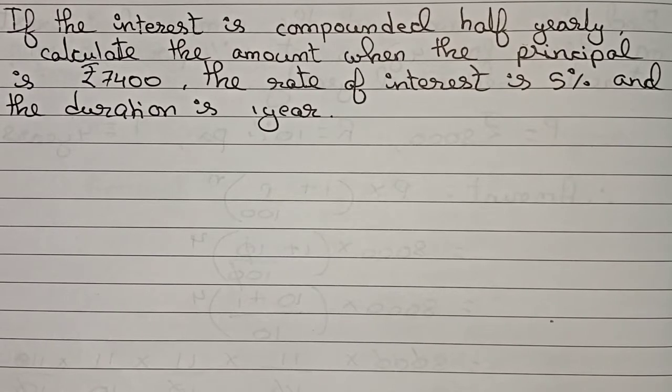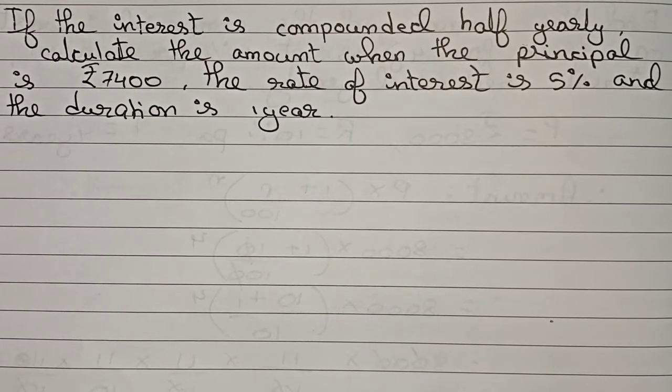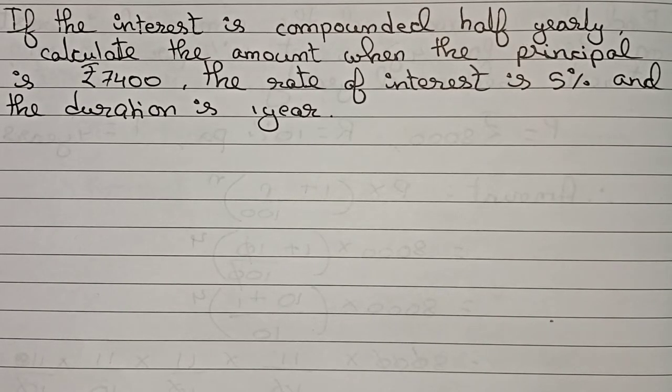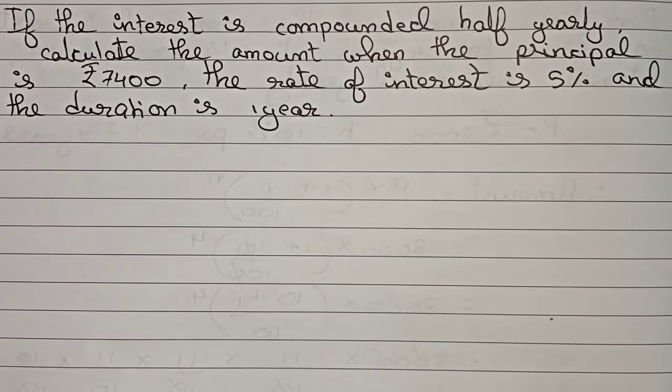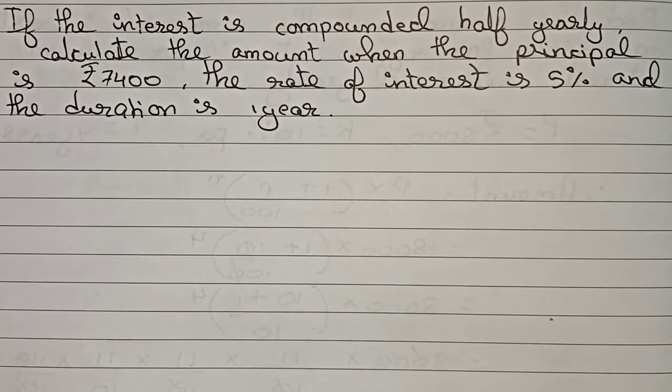Hello guys, welcome to this video. In this video, the question is: if the interest is compounded half yearly, calculate the amount when the principal is rupees 7400, the rate of interest is 5%, and the duration is 1 year.